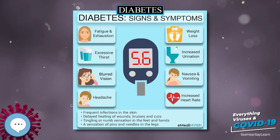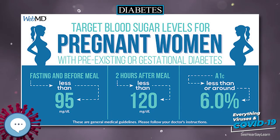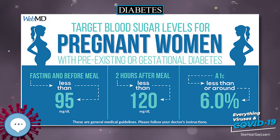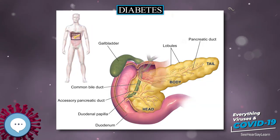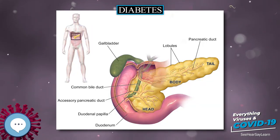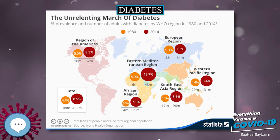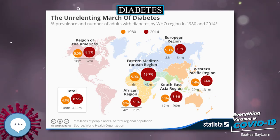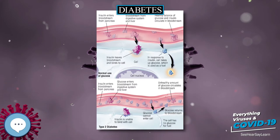Serious long-term complications include cardiovascular disease, stroke, chronic kidney disease, foot ulcers, damage to the nerves, and damage to the eyes. Diabetes is due to either the pancreas not producing enough insulin, or the cells of the body not responding properly to the insulin produced.